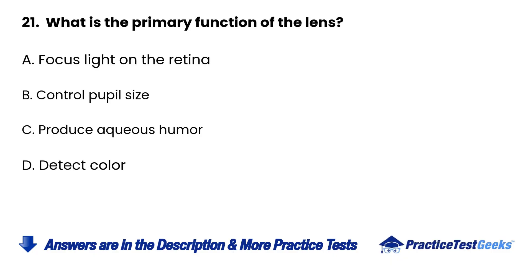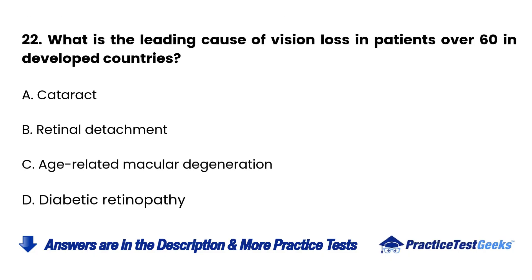21. What is the primary function of the lens? A. Focus light on the retina B. Control pupil size C. Produce aqueous humor D. Detect color